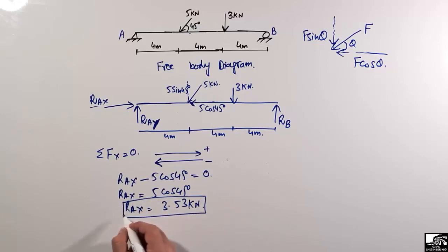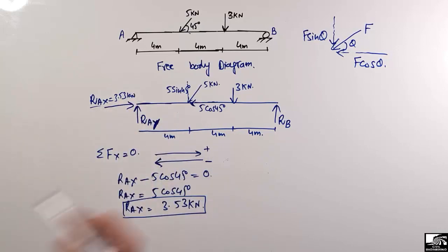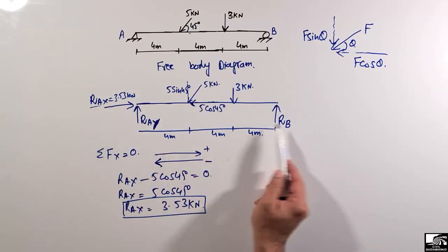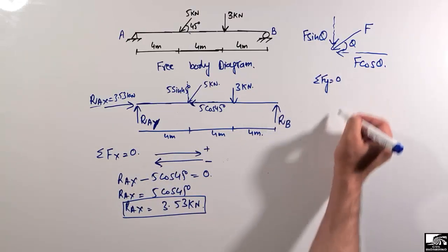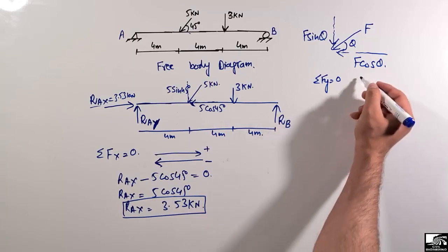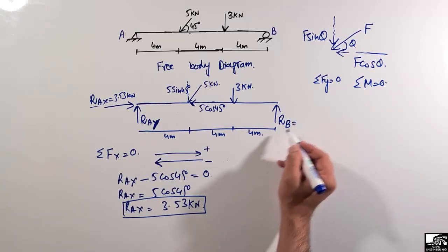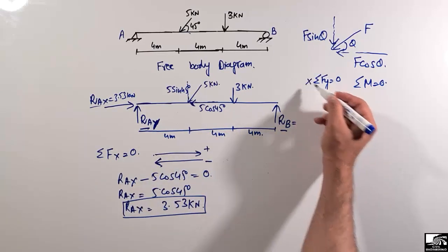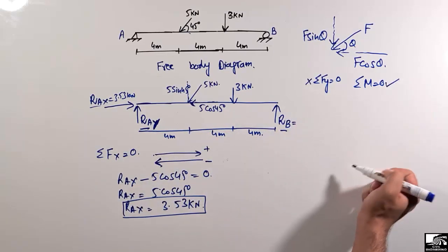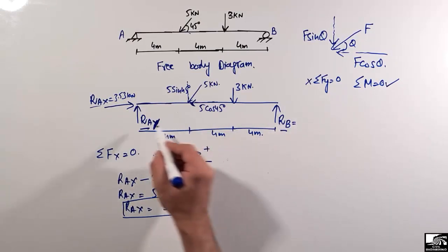Now to find RB and RAy, there are two unknown vertical reactions, so we cannot use just the vertical force equation directly. Instead, we use the moment equation — summation of moments equals zero — to find one reaction at a time.